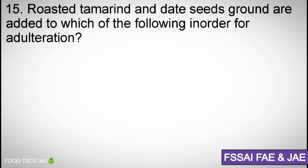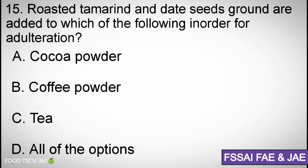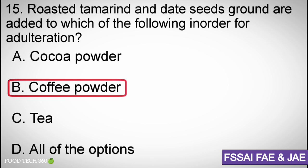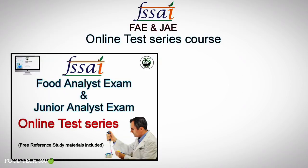Question number 15: Roasted tamarind and date seeds ground are added to which of the following for adulteration? A. Cocoa powder, B. Coffee powder, C. Tea, D. All of the options. Correct answer: D. All of the options.